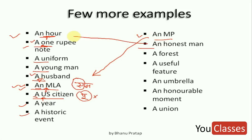So these are examples of how we use indefinite articles a and an. You don't use a or an based on the first letter of the word — you use them based on the pronunciation of the first sound of the word.